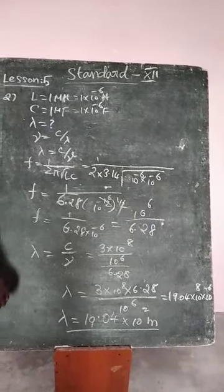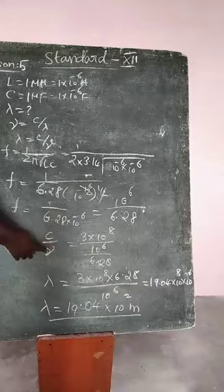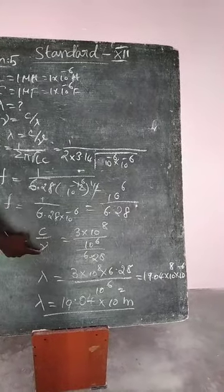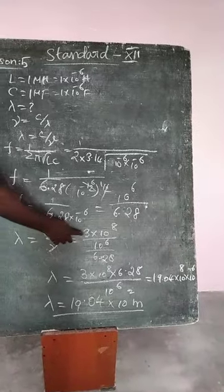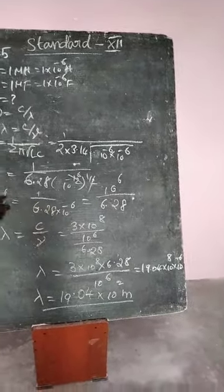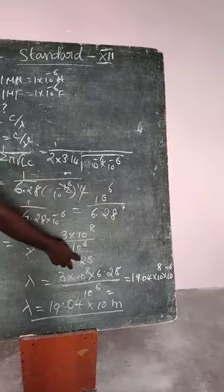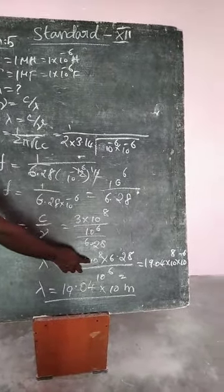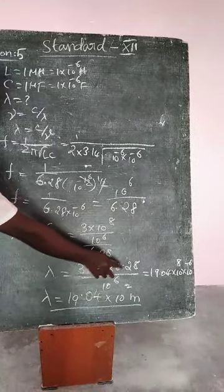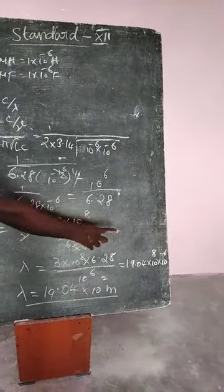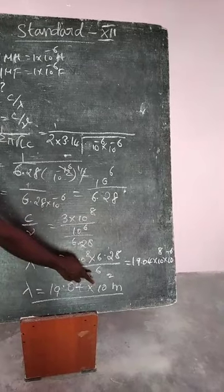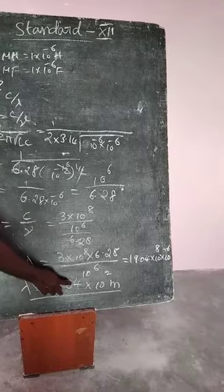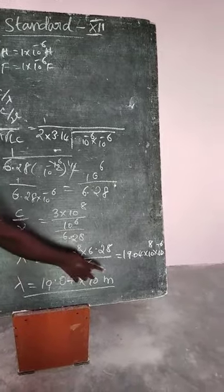Now we calculate lambda, where lambda equals C by nu. C is 3 times 10 power 8, frequency f equals 10 power 6 by 6.28. Lambda equals 19.04 into 10 power 2 meter.